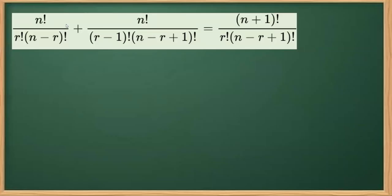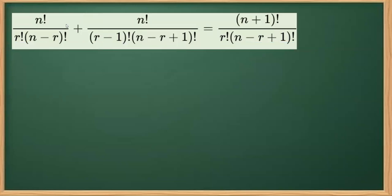This is one question taken from the permutation chapter and it's based on factorial. We have this LHS to be proved equal to this RHS. Things that you should keep in mind in proving is that our steps should be guided by what is there in the RHS to be proved and there in the LHS.